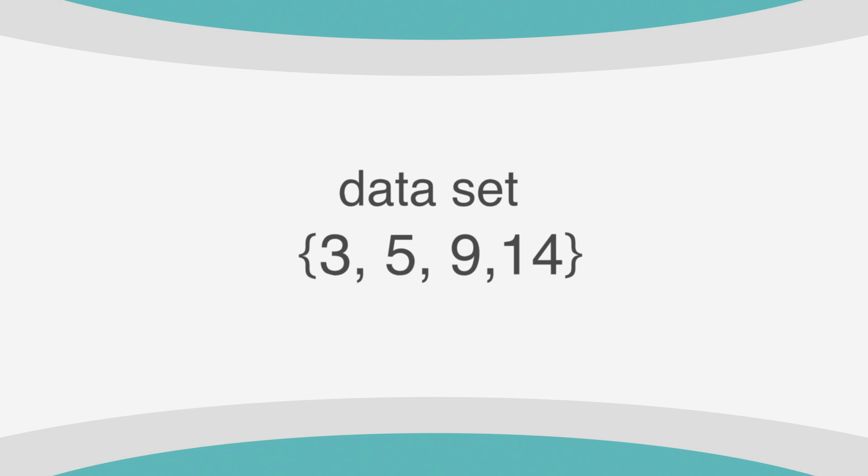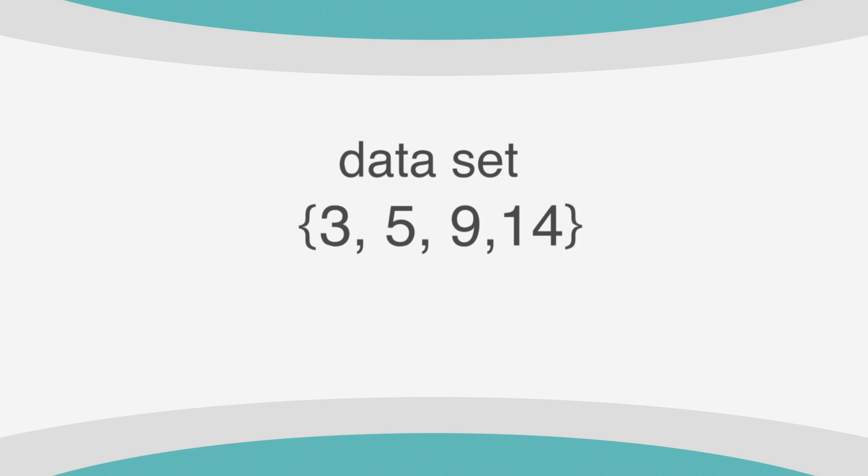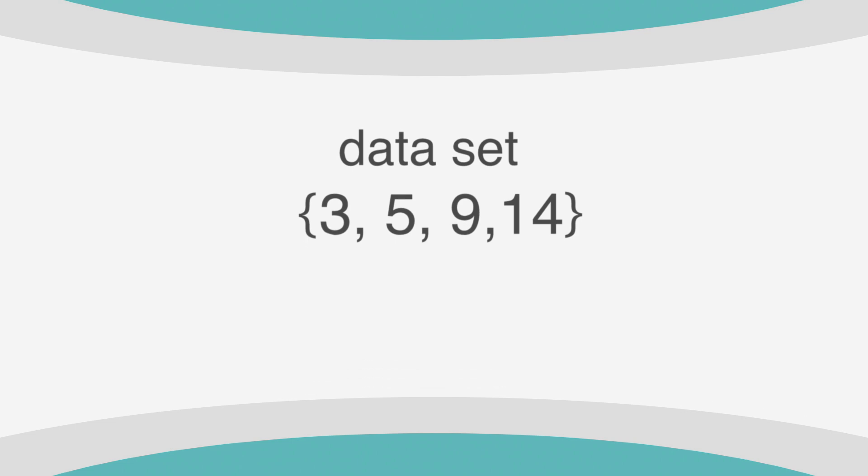If you're working with an even number of terms in a set, the rule is a little different. In this case, the median is going to be the average of the two middle numbers. To get this, we take those two middle numbers, 5 and 9, add them together to get 14, divide that by 2, and get 7. So 5 plus 9 divided by 2 gives us 7 as the median.